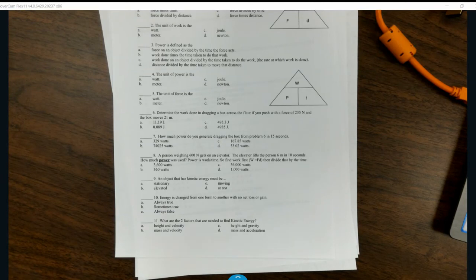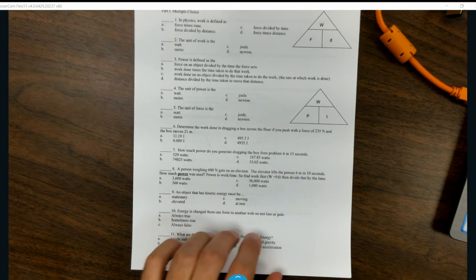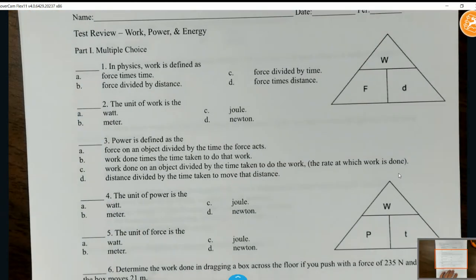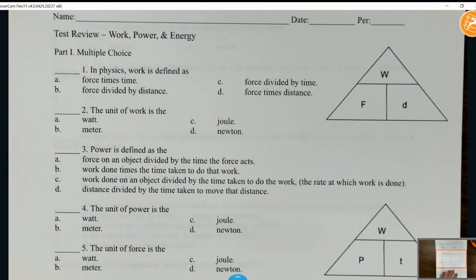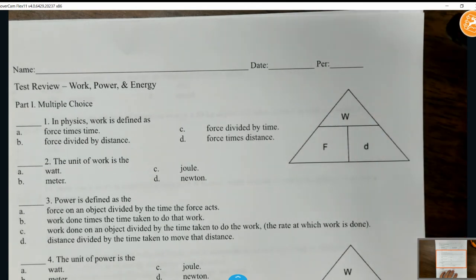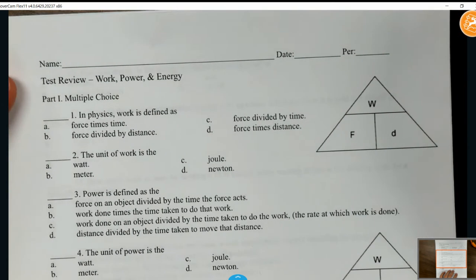Alright guys, what's going on? For this test review on work, power, and energy, I want to go through these problems with you so we have a good understanding of what to expect on our test tomorrow. Let's zoom in here. In physics, work is defined as force times distance. It's in the triangle right here as well. W is work. Work equals force times distance, so that's pretty easy.